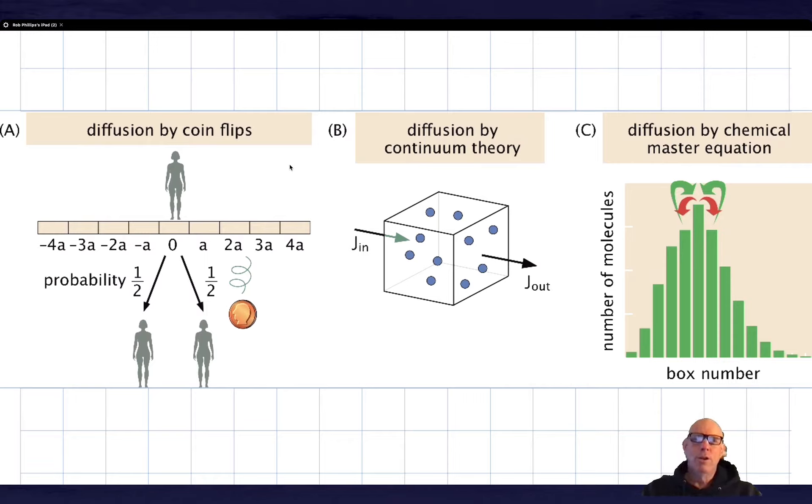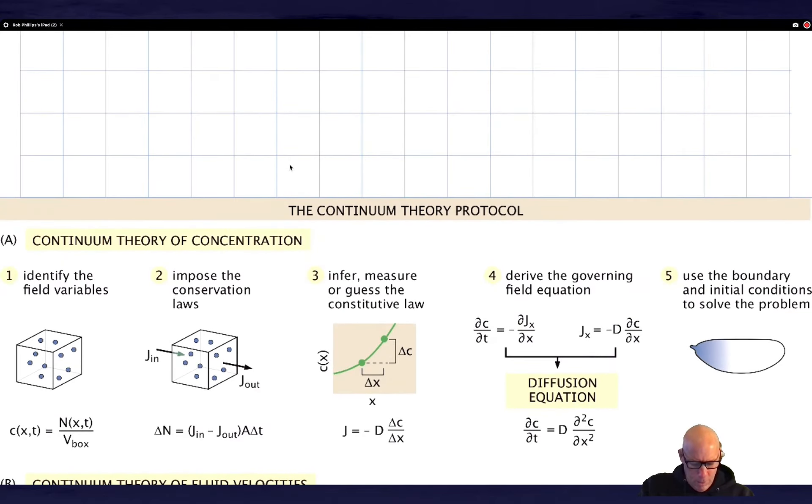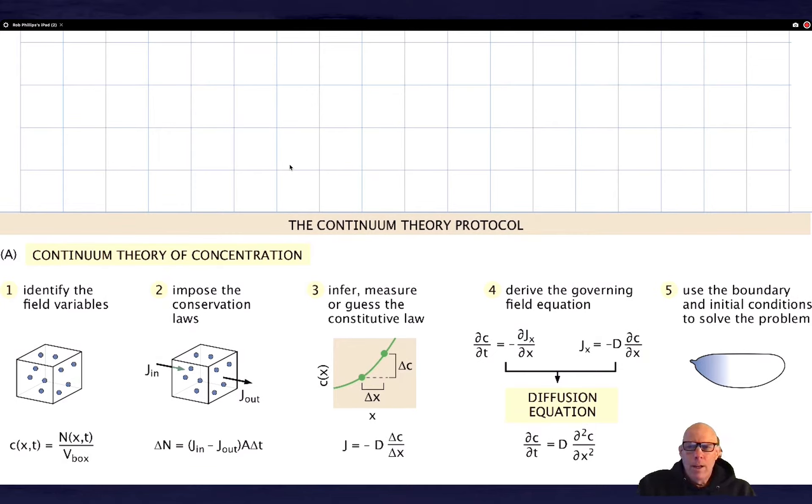So now we're going to tackle this deterministic diffusion by continuum theory approach. The way that I want this to unfold is by virtue of a notion that I'm going to refer to as the continuum theory protocol. And we're going to come back to it again and again through the rest of the term. The continuum theory protocol is five steps. It's a little bit contrived, but not really. It really is a very good way to organize your thinking when you confront a new problem.